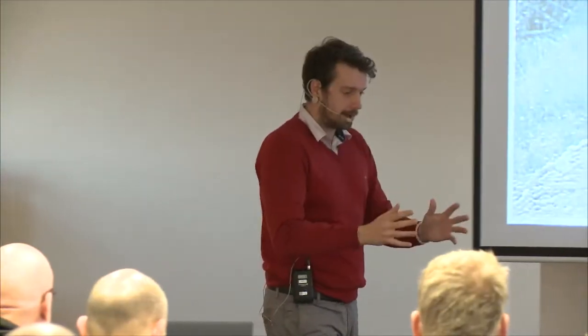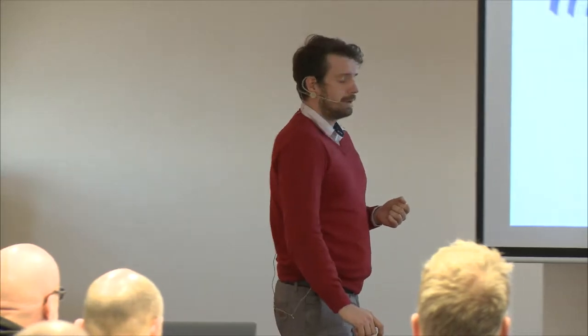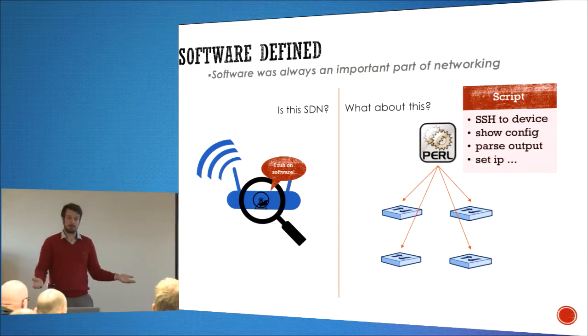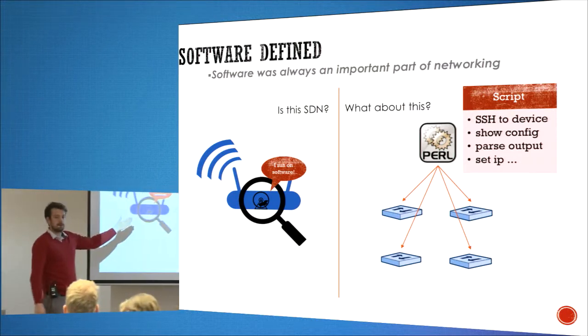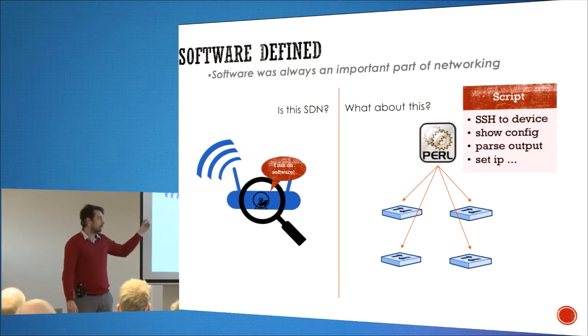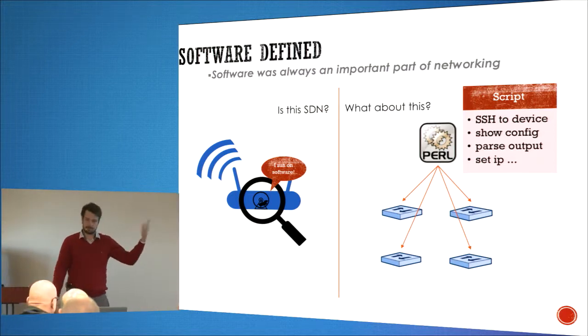We like to have our things defined, we like to have our standards, we like to have our protocols, so this is not very good for our networking world. Notice the word 'software' — didn't we have software in networking since forever? Where is software in networking? It's on every network device. There is an operating system in there. There may be some applications running on top of the network equipment. So, is this SDN? If it is, then we've had it since the beginning.